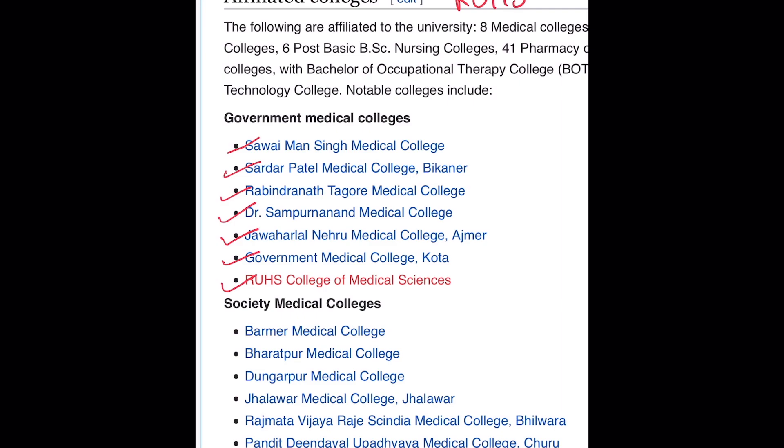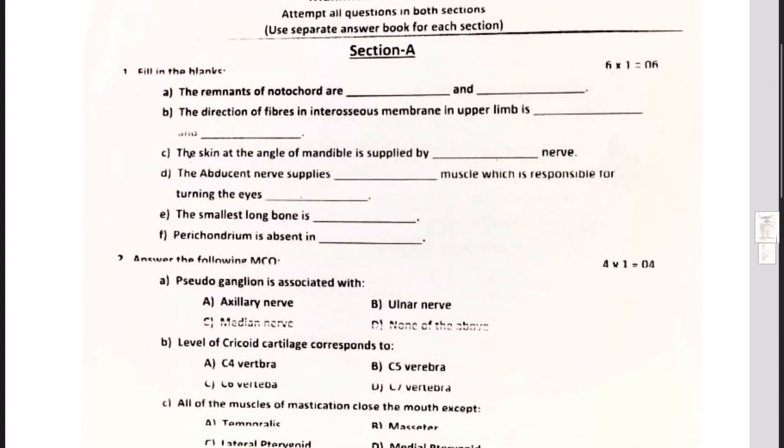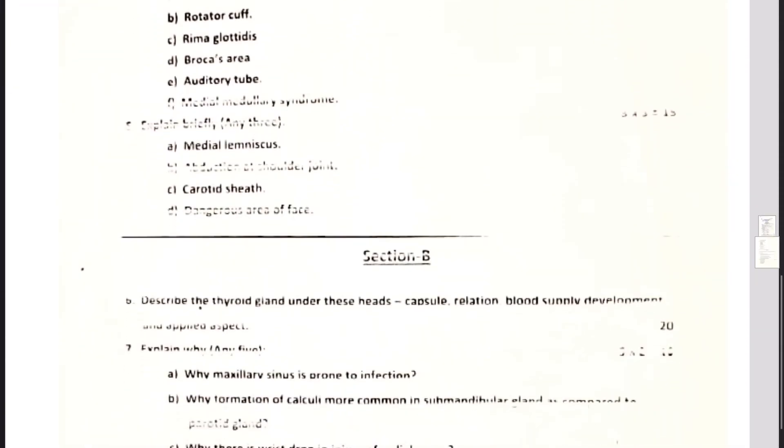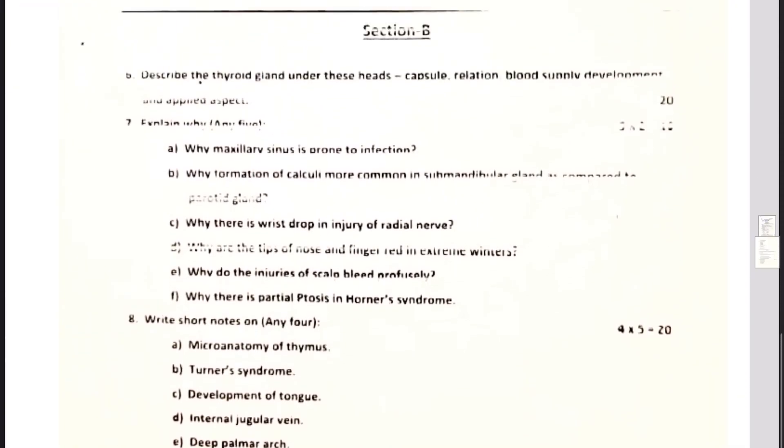Then the society medical colleges - there are Barmer Medical College, Bharatpur Medical College, Dungarpur Medical College, Jhalawar Medical College, Rajmata Vijaya Raje Scindia Medical College Bhilwara, Pandit Deen Dayal Upadhyay Medical College Churu. In this question paper there were two sections: section A and section B.